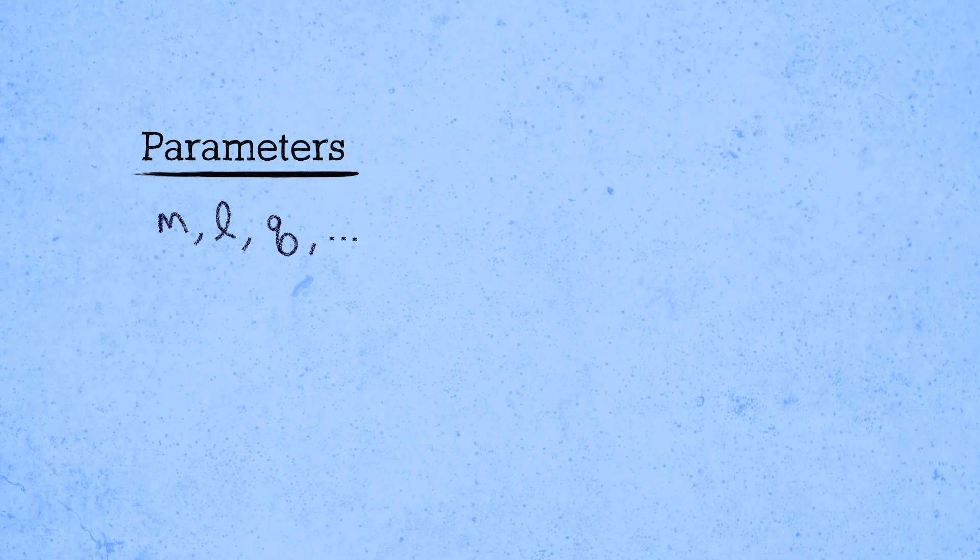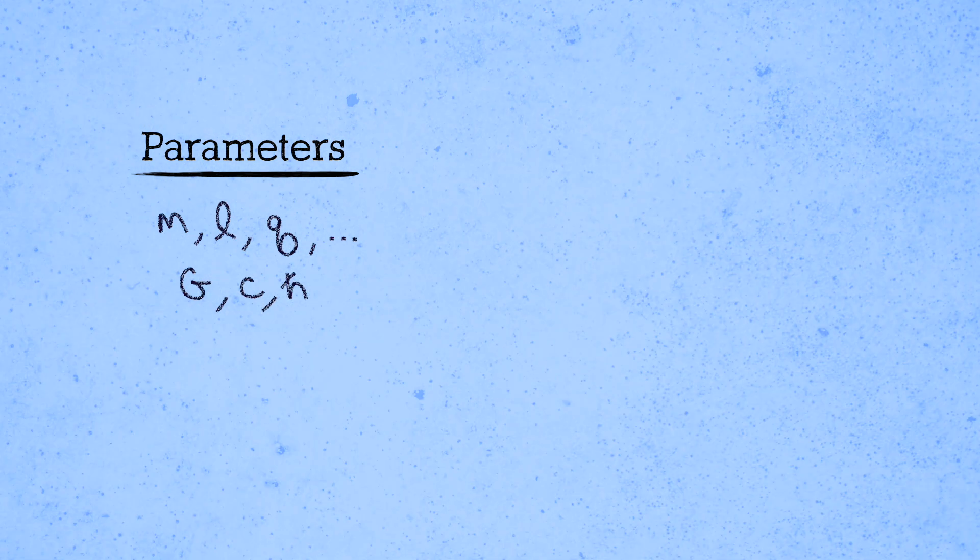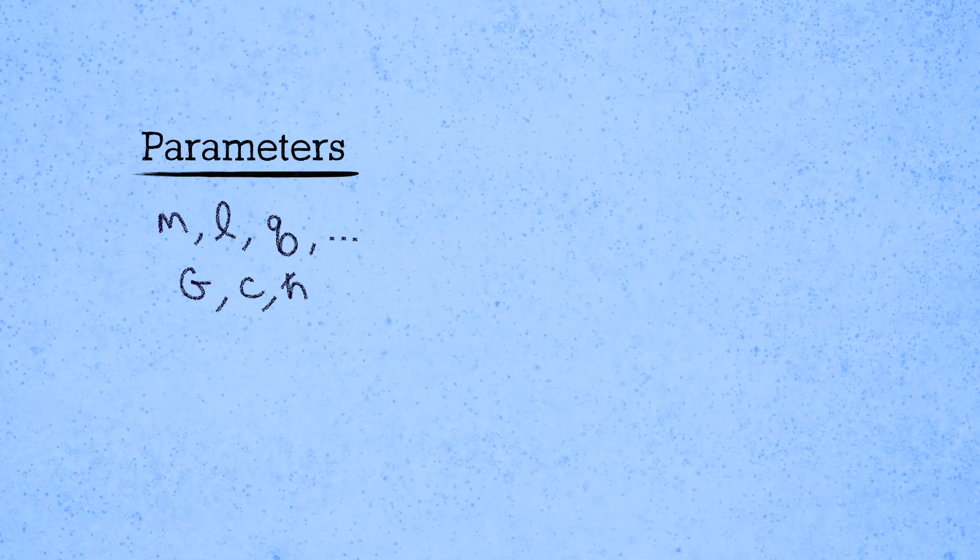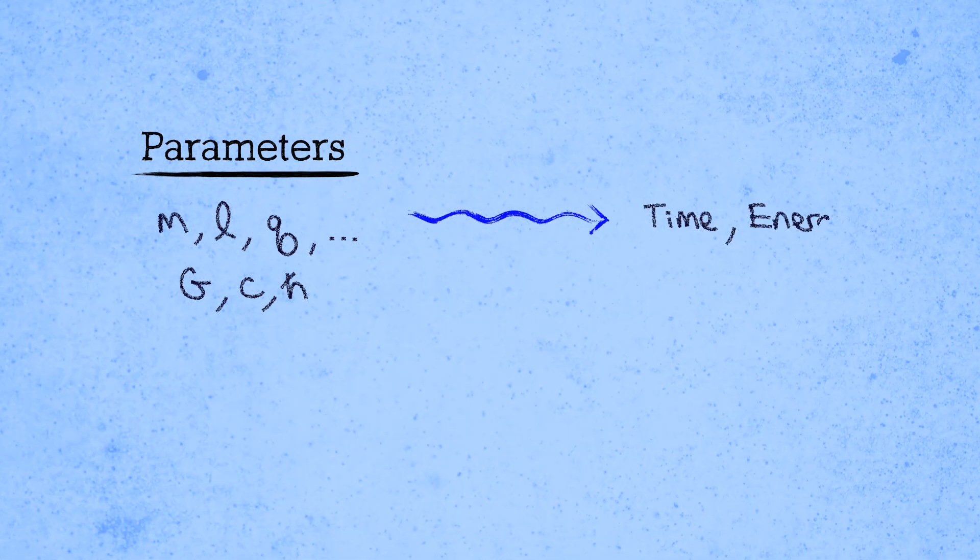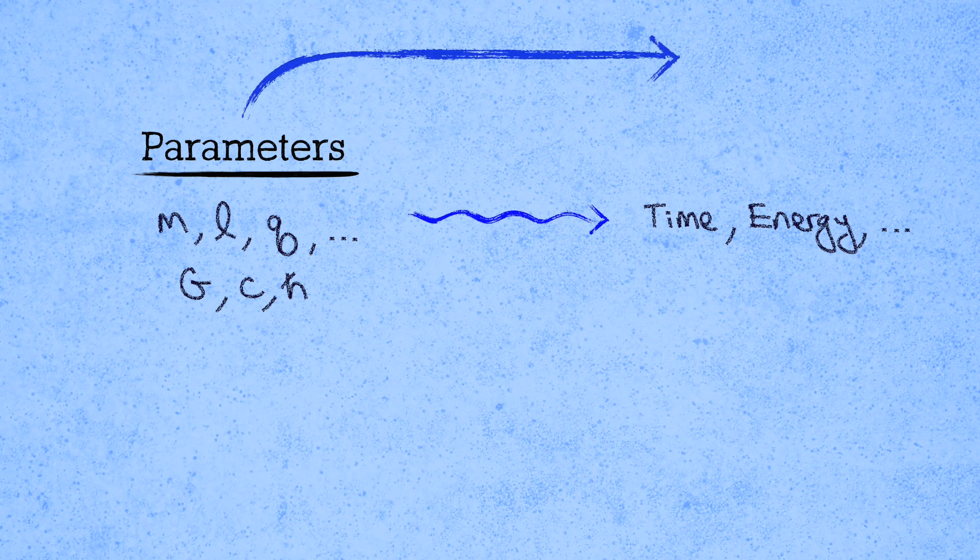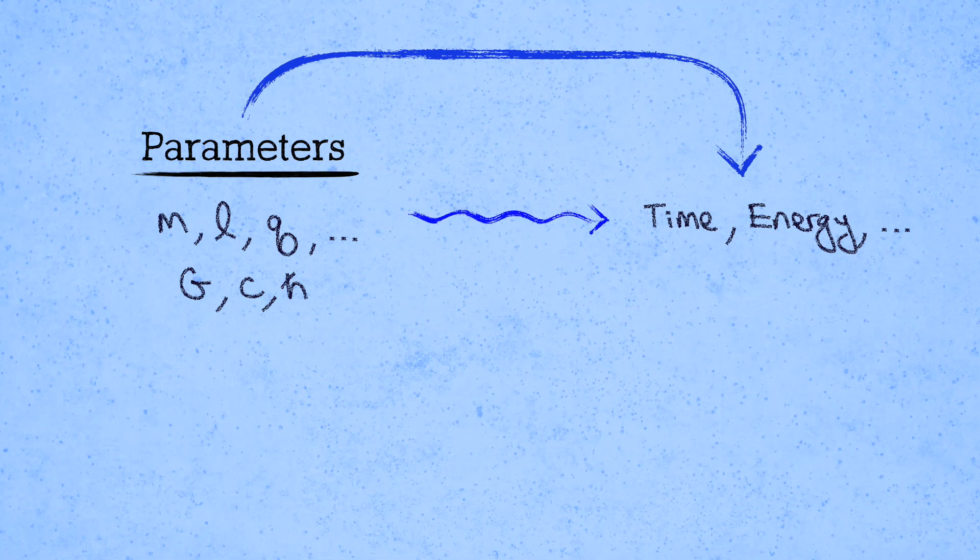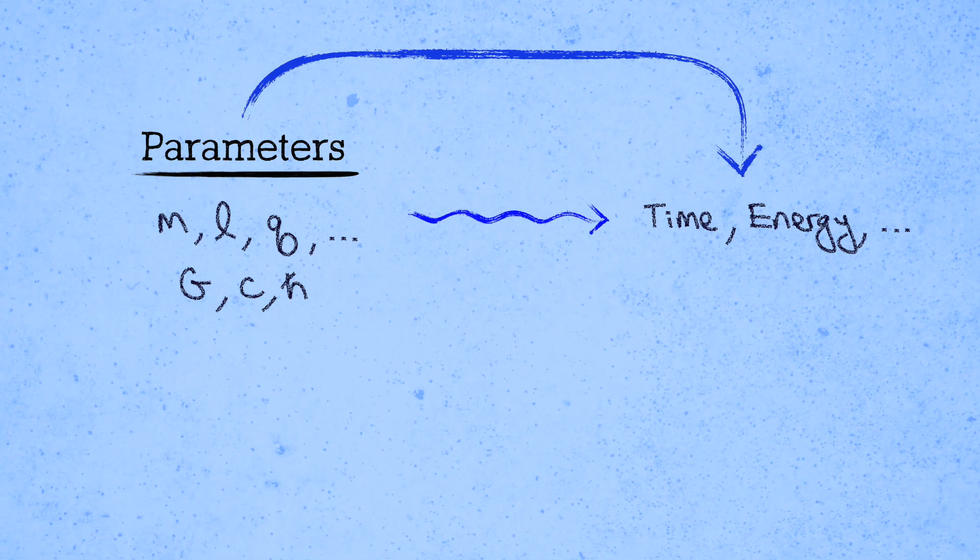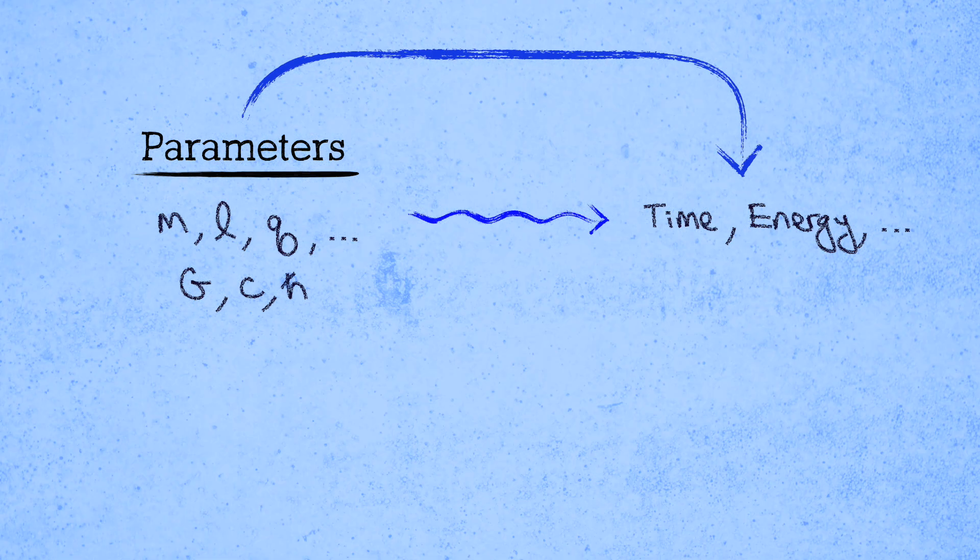In a given physics problem, we have some list of parameters at our disposal. Masses, lengths, charges, as well as fundamental constants like the gravity constant big G, the speed of light little c, and Planck's constant h-bar for quantum mechanics. And we're looking for an answer with some particular dimensions, like time, or energy, or whatever. The idea of dimensional analysis is just to figure out how we can combine the given input parameters in order to get the correct units of the desired output. Just thinking about how we can assemble the parameters of a problem to get the units right often gets us 90% of the way to the answer to our question with next to no effort.